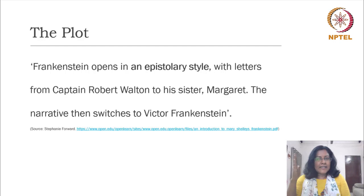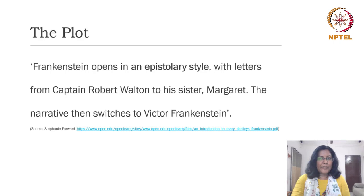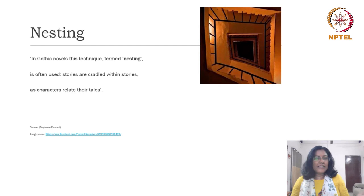We need to understand that this story is primarily told in the form of letters written by Captain Robert Walton to his sister Margaret. Along the way, the narrative switches to Victor Frankenstein who himself begins to tell from his own point of view. In Gothic novels, this kind of framed narrative or multiple points of view, where lots of people tell their tales through letters, can also be termed as nesting.